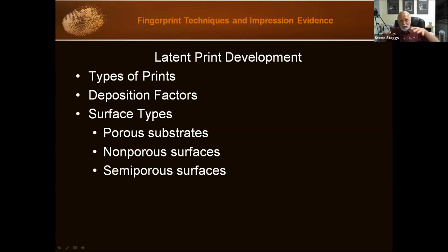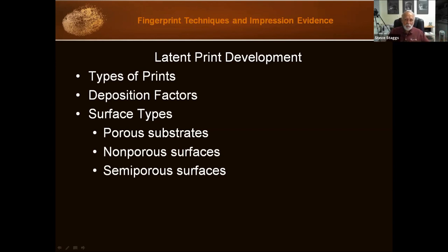Then there's this area called semi-porous — substrates that don't easily fit into the first two categories. Semi-porous surfaces are characterized by their nature to both resist and absorb fingerprint residue; the residue may or may not soak in. These surfaces might include glossy cardboard, glossy magazine covers, some finished wood, and some cellophane. With semi-porous surfaces you can use either the techniques for porous or for non-porous — super glue, powders, or chemical processes that target amino acids.